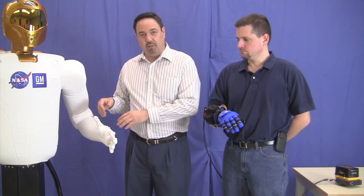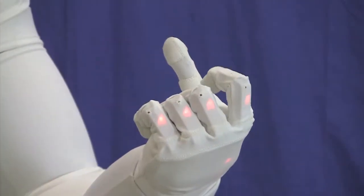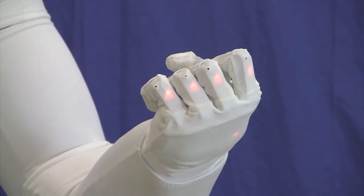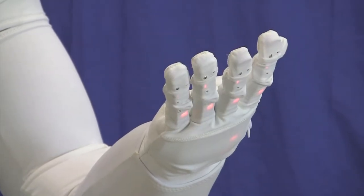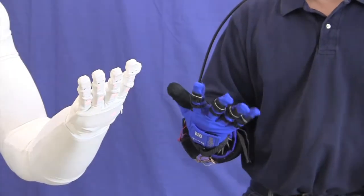The unique thing about R2 is its hands and its abilities to manipulate objects and to do work. We've taken the same technology, the tendon driven actuators and the sensors, and translated that from the robot into a glove that the human operator could wear.